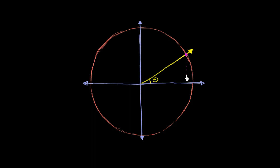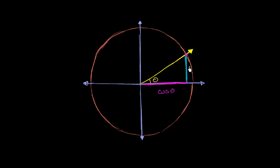Another way of thinking about it: the cosine of theta is the length of what I'm drawing in purple right over here — that length right over there is cosine of theta. And the sine of theta is the y-coordinate. Another way of thinking about it, the sine of theta is the length of this line — how high you are above the x-axis, that is essentially the y-coordinate, and the length of that is sine theta.